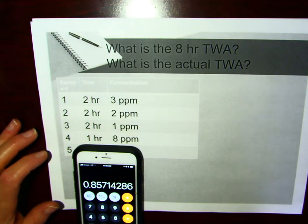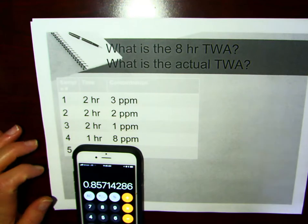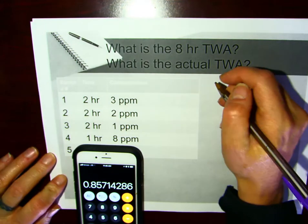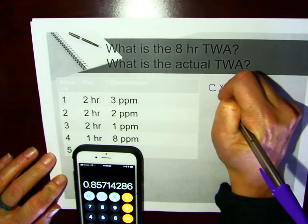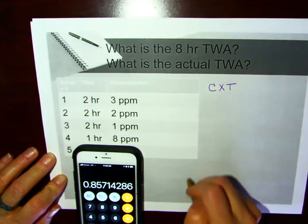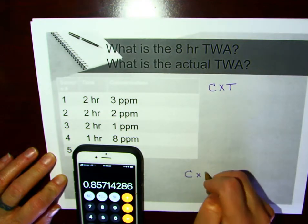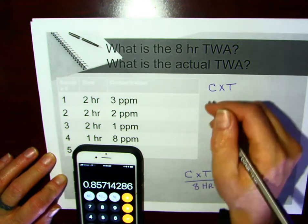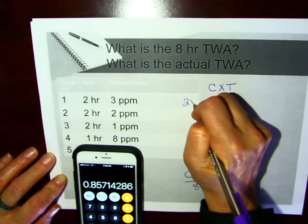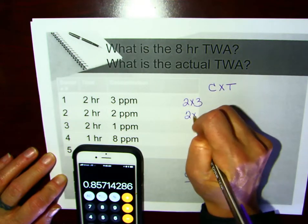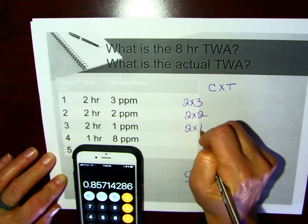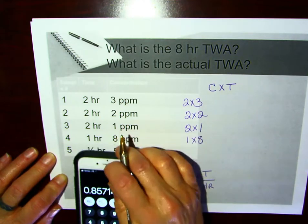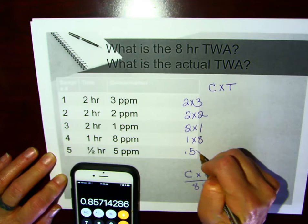So here is our problem. To calculate an 8-hour time-weighted average, we have concentration times time, concentration times time over 8 hours. So concentration times time would be 2 times 3, 2 times 2, 2 times 1, 1 times 8, 0.5 times 5.